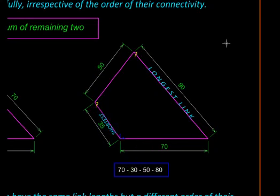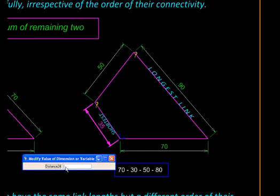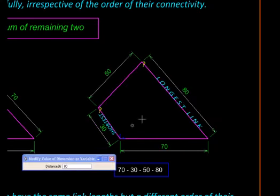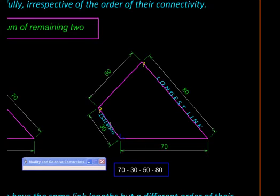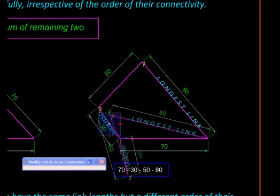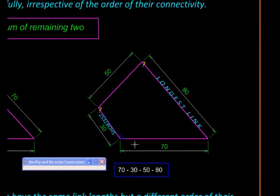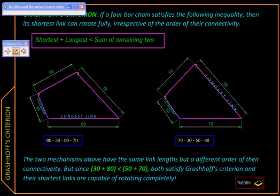So let us change the link lengths. So I will change this to 30 and this to 80 and retest it. And there we go, now we have a crank again.